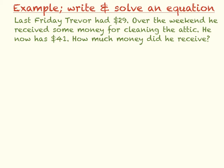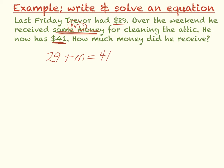And the last example. Last Friday, Trevor had $29. Over the weekend, he received some more money — we don't know how much, but he received some money M for cleaning the attic. He now has $41 total. How much money did he receive? So that would be $29 because he started with $29, and then he got some more money M added to his $29, and when he added that to his $29, he had $41. So that is my equation.